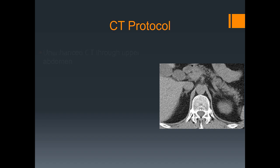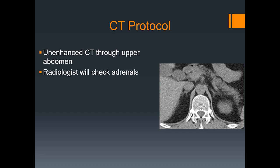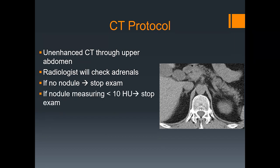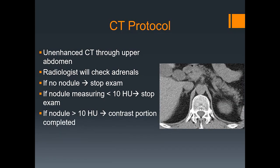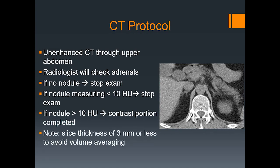Let's start with the CT protocol. First, we perform an unenhanced CT through the upper abdomen to include the adrenal glands, and then the radiologist should be called to check the scan. If there's no nodule and the adrenal glands appear normal, the exam can be stopped. If there is a nodule measuring less than 10 HU units, the exam can also be stopped. One note about technique: the slice thickness should be around 3 mm or less to avoid volume averaging when placing ROIs.